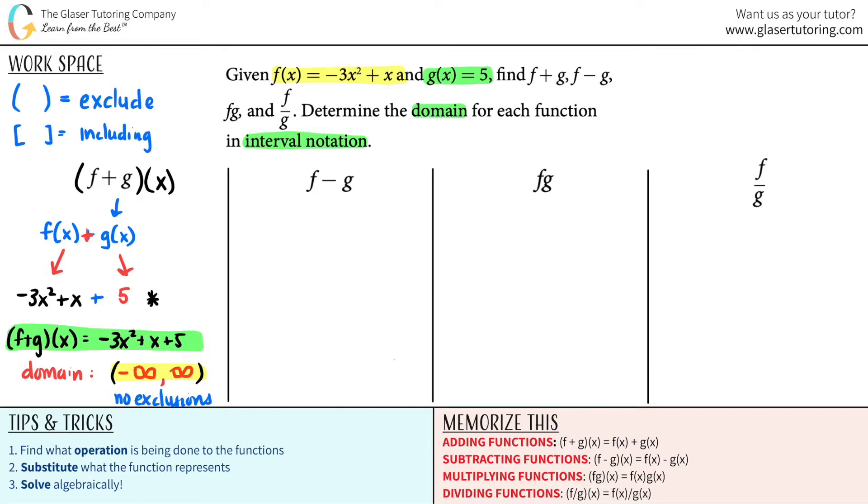Pretty simple. Let's go to the next one. f minus g of x. Well, this is the same thing as saying f of x minus g of x. So now all I got to do is plug in f of x, then plug in g of x, and subtract them to one another. So let's go.